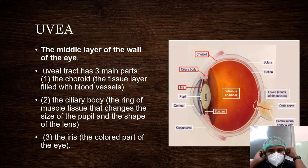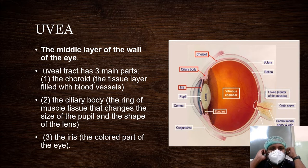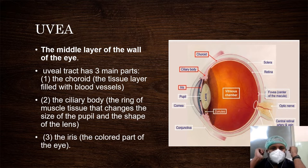We have to know what is the uvea. It is the middle layer of the eye. It contains three parts: iris, ciliary body, and choroid. The pigmented part, i.e., colored part, is called the ciliary body — the ring of muscle tissue that changes the shape of the lens. The choroid is the tissue layer filled with blood vessels, and is the most vascular part of the eye.